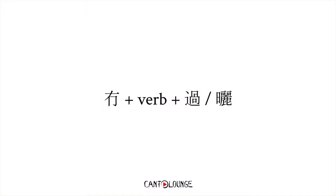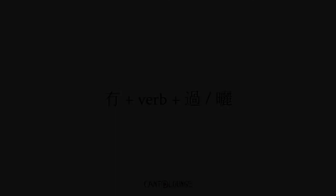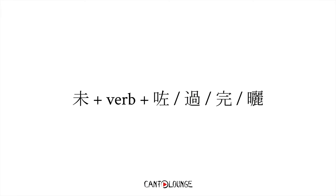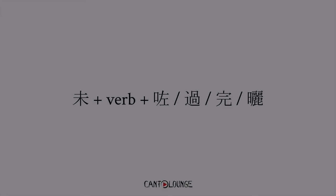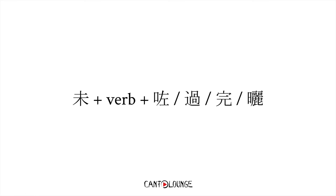There are two general patterns to remember. One would be 無, which you add before the verb, and the verb is followed by 過 or 曬. This is a simple negation — you're saying that you didn't do something, you haven't experienced something, you haven't finished something. Or you can add 未 before the verb when it's followed by any of the four aspect markers. 未 means 'not yet' — so 'I didn't do yet,' 'I haven't experienced this yet,' 'I haven't finished it yet,' and so on. The main difference is that for 無 you can only use this for 過 and 曬, whereas for 未 you can add 左 and 完 to this pattern as well.